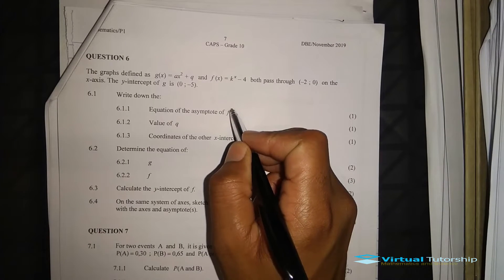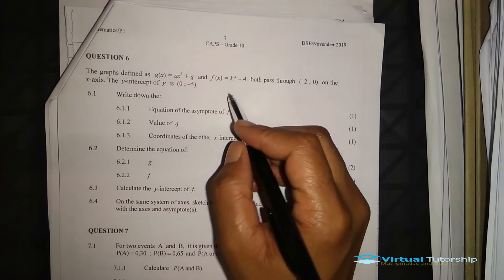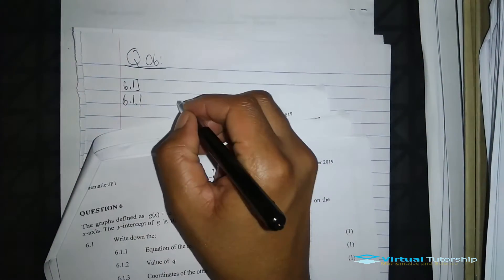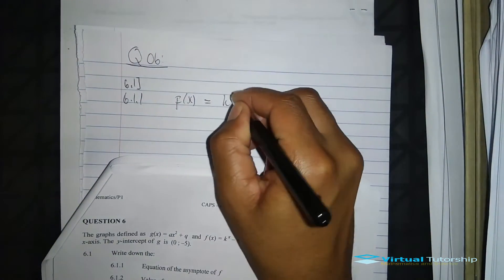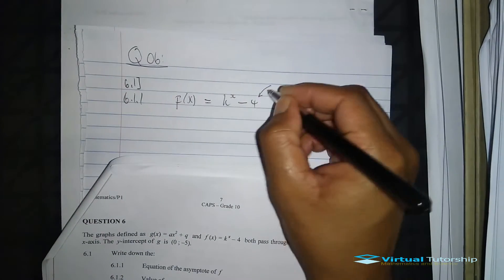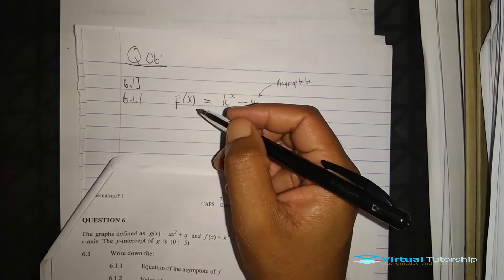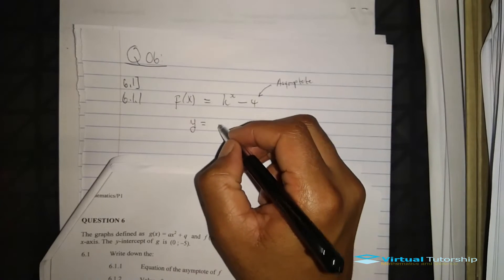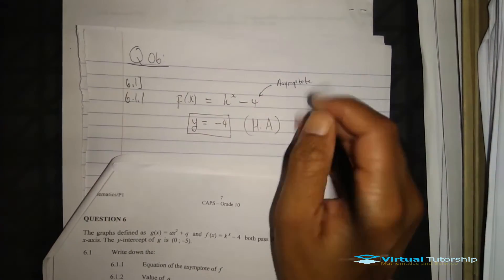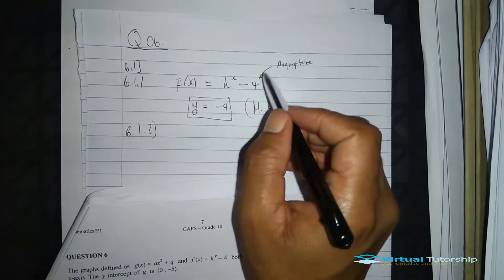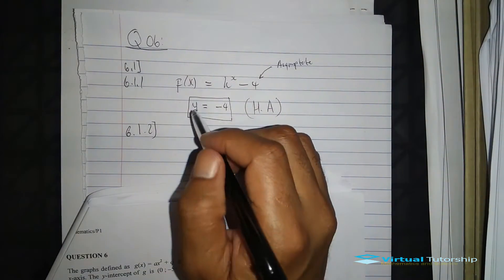Question 6.1: Write down the equation of the asymptote of F. An exponential function has one asymptote, which is the constant in the function. F(x) equals k to the exponent x minus four. The minus four is what gives the asymptote. So the equation of the asymptote is y equal to negative four. This is the horizontal asymptote. An exponential function has only one asymptote, in this case y equal to minus four.